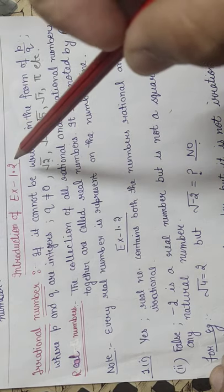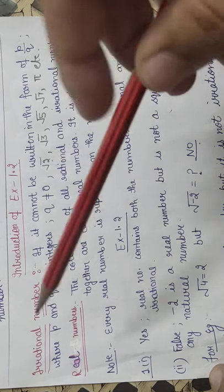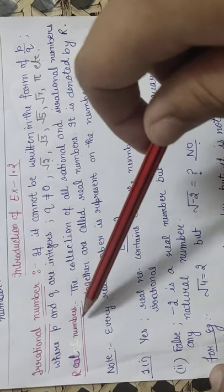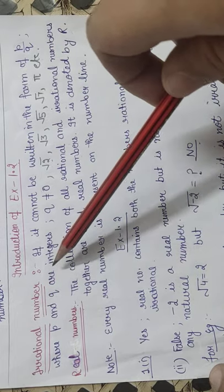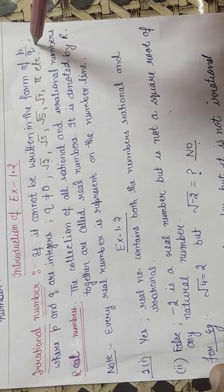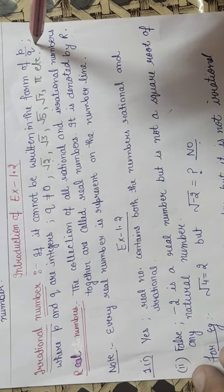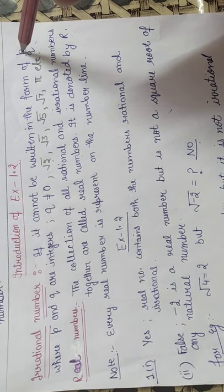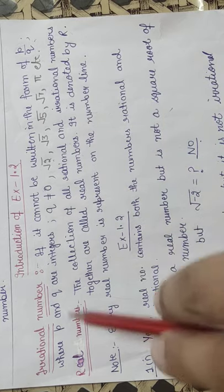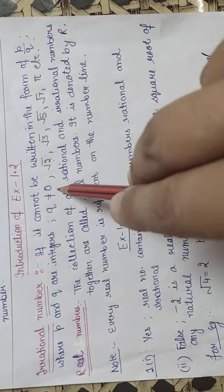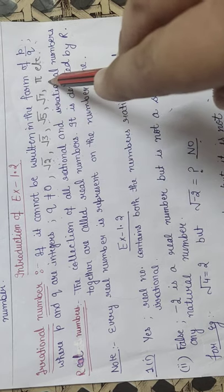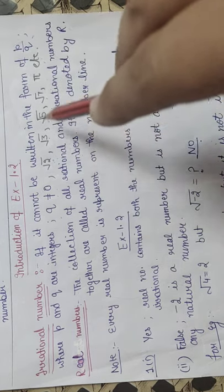Today we start with Exercise 1.2. Before starting the exercise, I want to introduce what irrational numbers and real numbers are. Irrational numbers are those numbers which we can't write in the form of p/q — that means those numbers which are not represented by p/q form are called irrational numbers, where p and q are integers and q is not equal to 0. For example, √2, √3, √5, √7, π, etc.